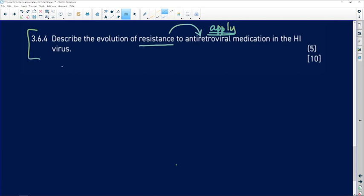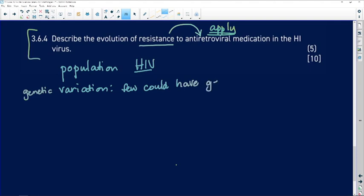Basically, what we have is a population of HIV. In that population, there will be genetic variation. And the genetic variation could be that very few organisms, HIV viruses in this population, could have some kind of gene that gives them immunity or resistance to this particular medication.